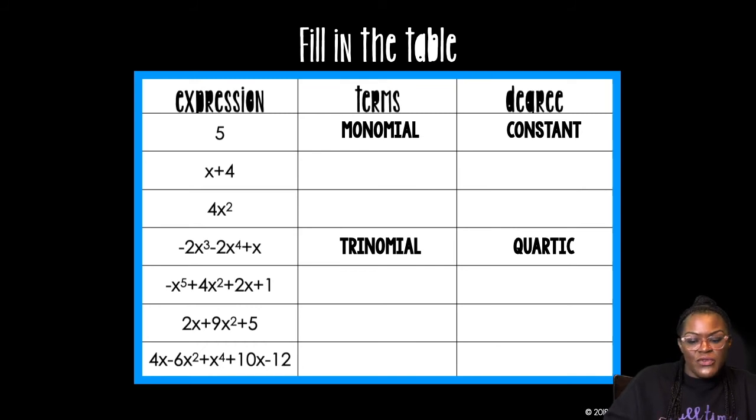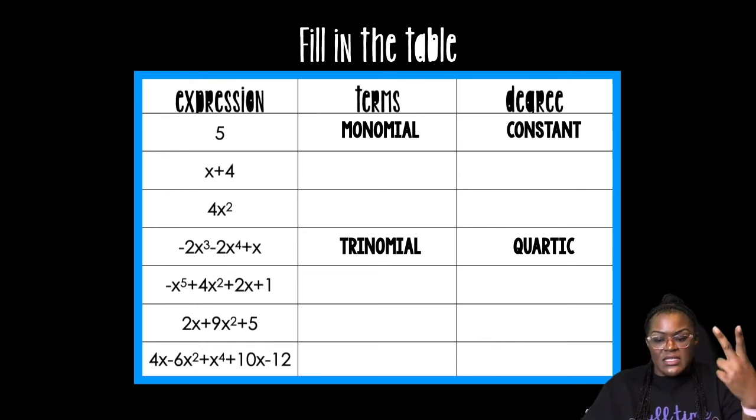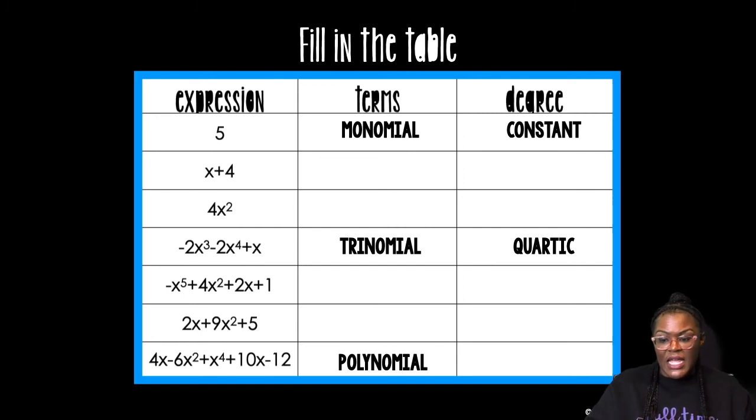Let's do the bottom one. 4x minus 6x squared plus x to the 4th plus 10x minus 12. How many terms is it? We have the 4x, the negative 6x squared, the x to the 4th, the 10x, and then you have the negative 12. So that's five terms. When it's five terms, I just call it a polynomial. The degree, remember the degree is the highest exponent. They're out of order because they're trying to trick you. The highest exponent is 4, so I call that a quartic.